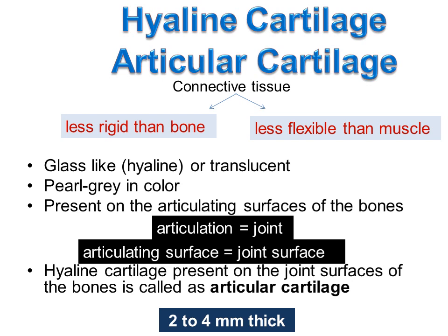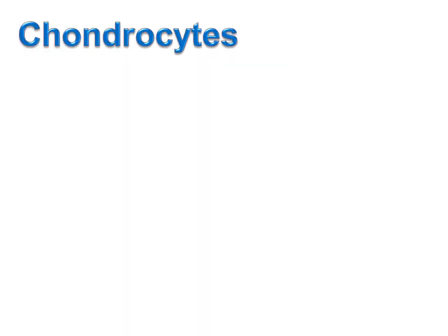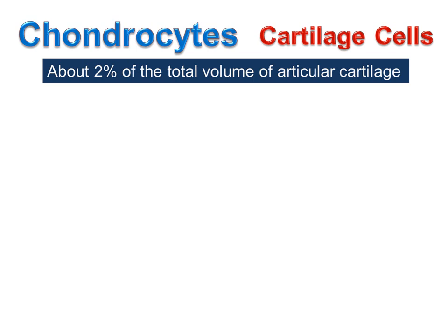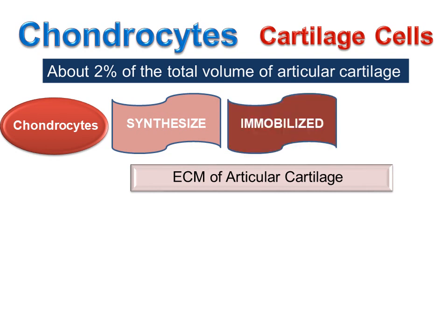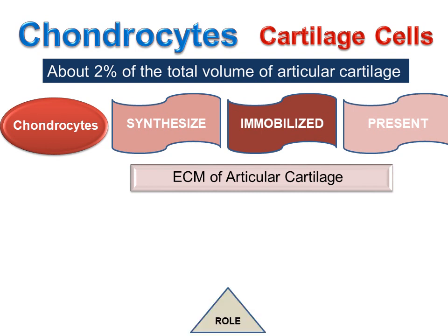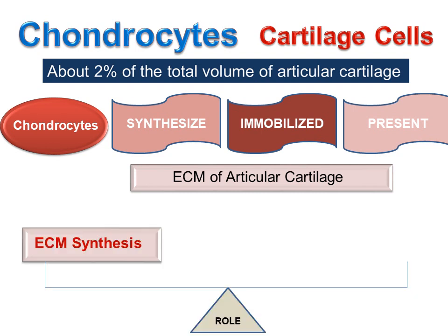Articular cartilage or hyaline cartilage is 2 to 4 mm thick. Articular cartilage is made up of highly specialized active cells called chondrocytes. Chondrocytes is made up of two words: 'chondros,' meaning cartilage in medicine, and the suffix 'cyte,' meaning cell. Chondrocytes, or cartilage cells, are the only cells found in healthy cartilage. They make up about 2% of the total volume of articular cartilage, synthesize the extracellular matrix (ECM) of the cartilage, and are immobilized within the dense ECM in normal articular cartilage. The unique role of chondrocytes is to maintain balance between ECM synthesis and ECM breakdown.